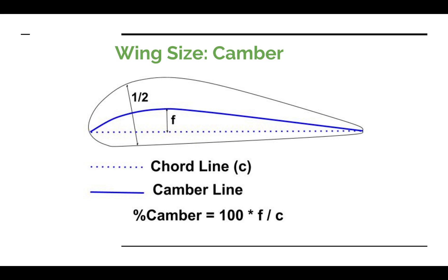But that is not the normal definition of camber. The normal definition is a line running from the leading edge back toward the trailing edge, halfway between the bottom surface and the top surface of the airfoil — that's the camber line. To determine camber from the camber line, you take the difference F between the chord line and the camber line, then divide by the chord line and multiply by 100 to get a percentage. If F was 7 inches with a 100-inch chord, that would be 7% camber. But for Appendix 2, we'll use the top curve as our camber line.